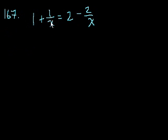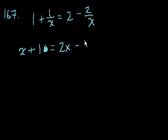The first thing I would do is I don't like these x's in the denominator, so I'll just multiply both sides of this equation by x. So I'll get x plus, x over x is just 1, equals 2x minus 2.